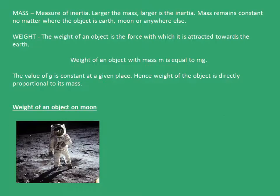Now we will see two quantities: mass and weight. Mass is a measure of inertia. Larger the mass, larger is the inertia. Inertia is the tendency of an object to resist motion. Mass remains constant no matter where the object is—earth, moon, or anywhere else.